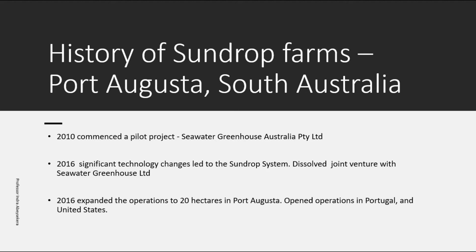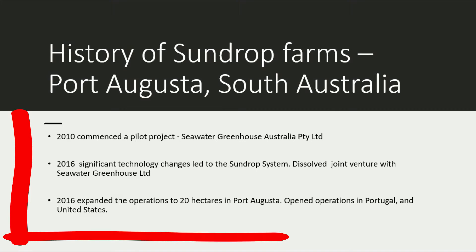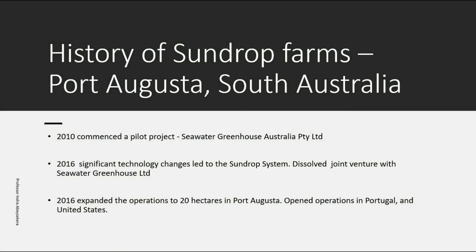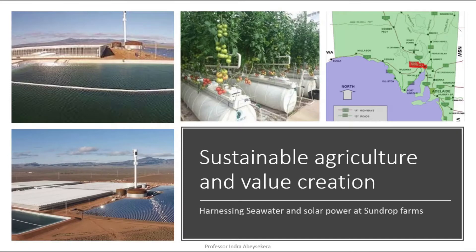Touching on the history of Sundrop Farms, which is located in Port Augusta, South Australia: they commenced operations as a pilot project in 2010 under Seawater Greenhouse Australia Pty Ltd. In 2016, significant technology changes led to the Sundrop system, which also led to dissolving the joint venture with Seawater Greenhouse Australia Pty Ltd. At the same time, they expanded operations to 20 hectares in Port Augusta and opened operations in Portugal and the United States.